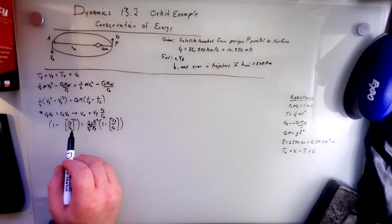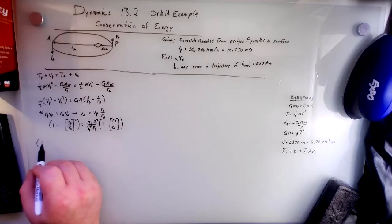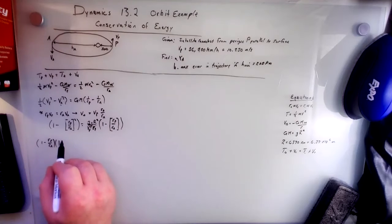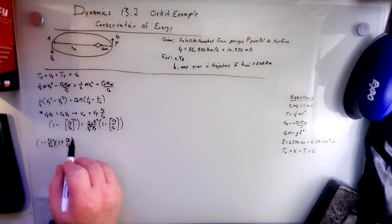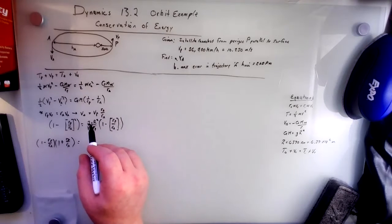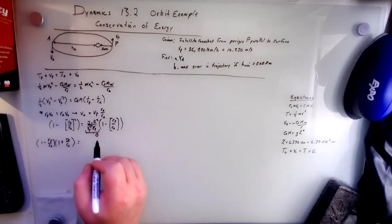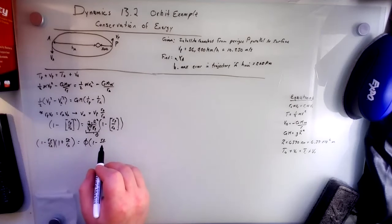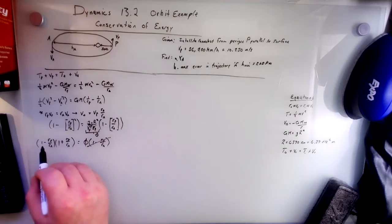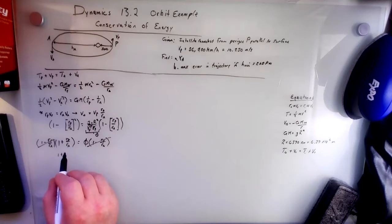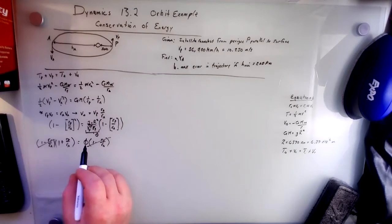Now, this is the difference of squares, right? And if we expand it, then we get one minus RP over RA times one plus RP over RA equals this. For the time being, let's just call this phi, right? So this and this cancel.